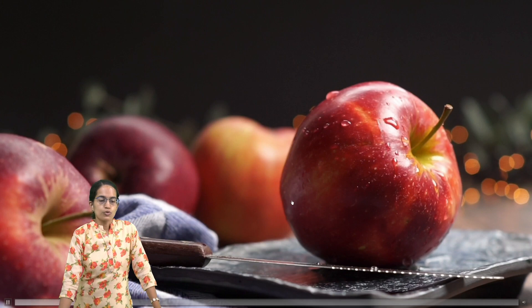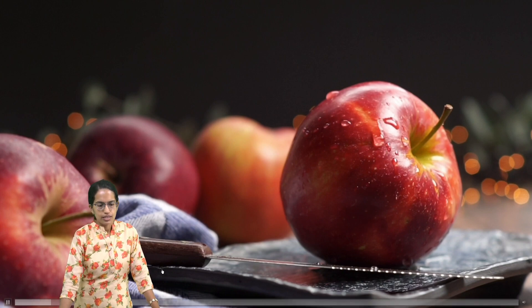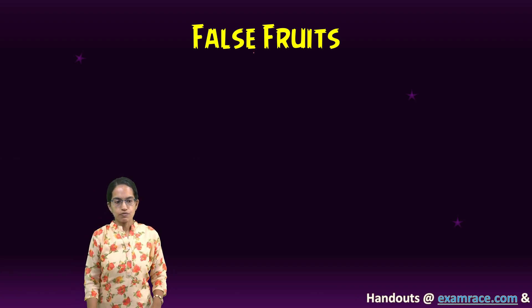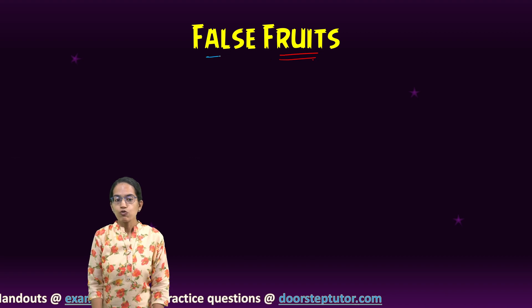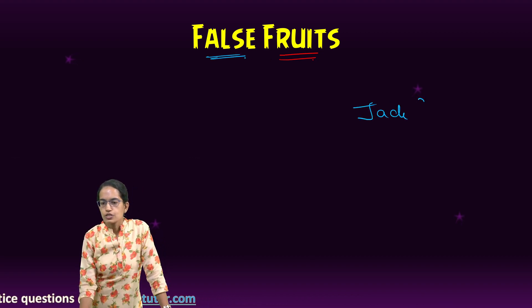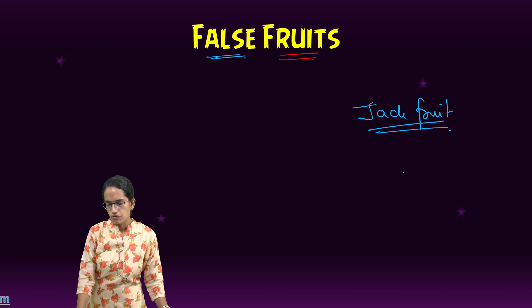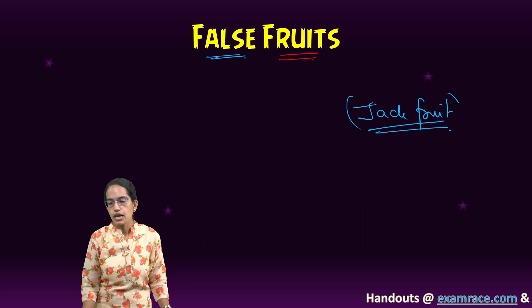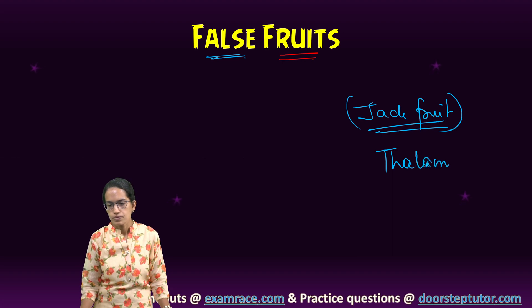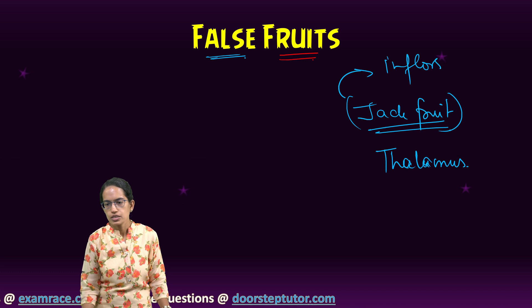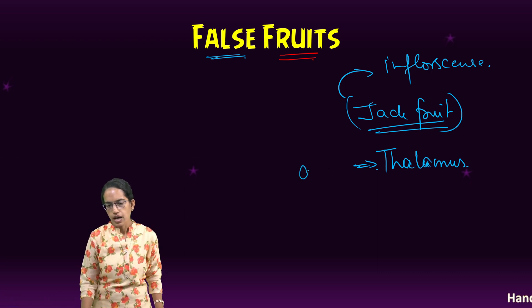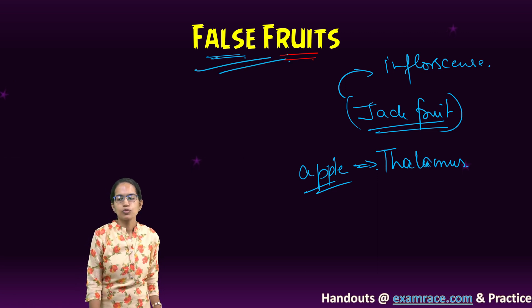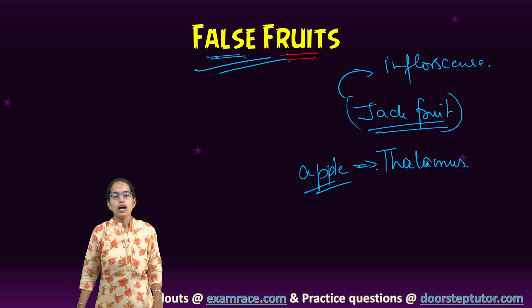Coming on to false fruits: apple is a unique false fruit. The predominant reason is that under apple, the thalamus develops as the fruit. In the case of jackfruit, it is the inflorescence which develops. Apple develops from the thalamus, while jackfruit has inflorescence. Other false fruits include pear, cucumber, and gourd.